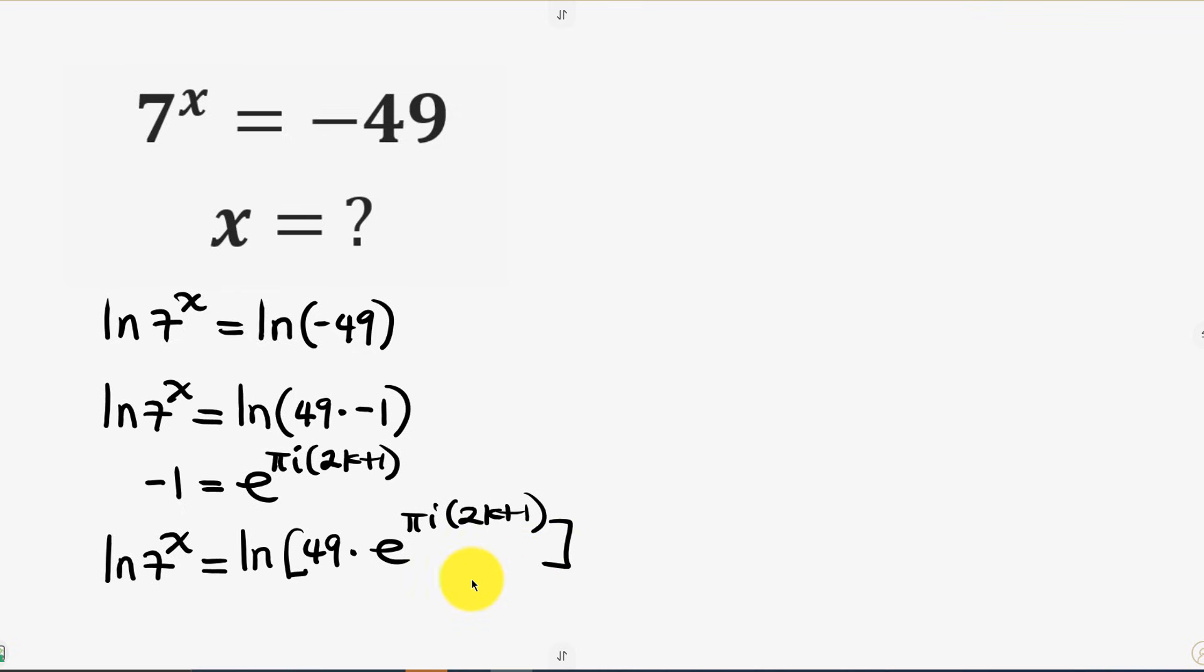Now our next step will be to apply the law of logarithm that says that when I have ln of a times b, this is the same as ln of a plus ln of b. So this expression becomes ln of 7^x equal to ln of 49 plus ln of e to the power of pi i times (2k + 1).